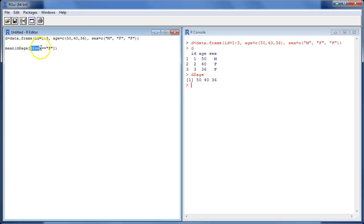And then we have this part D dollar sex, which is a factor, turns out, containing M F F two levels. And then we have this part, which is obviously just what it is, a vector of length one containing female.